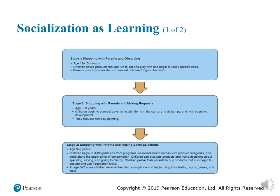Stage four, shopping independently, age seven to eleven years. Parents gradually, often reluctantly, begin to allow children to go to stores or shop online alone or with friends. Children discover the wonders of shopping and decide among choices. Children understand the persuasive intent of ads and begin to process information regarding products, developing purchase influence and negotiation strategies.